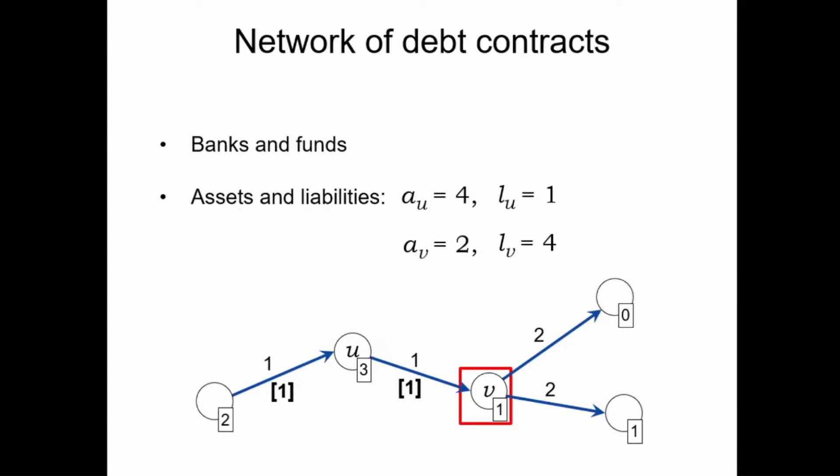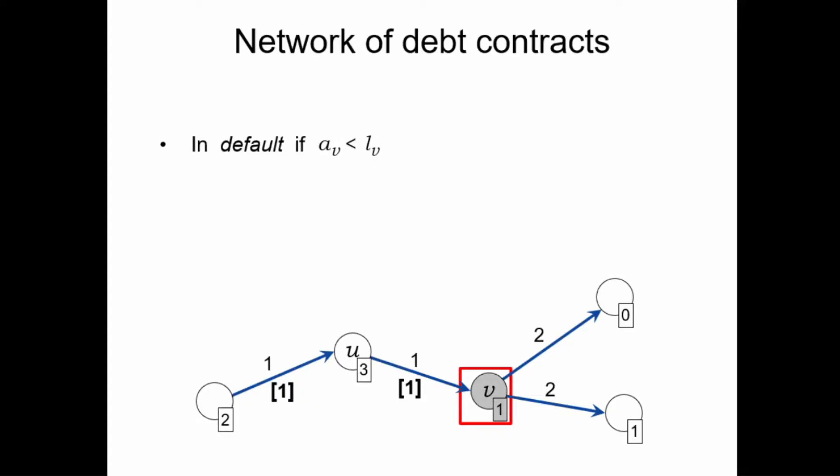Bank V has one unit of money itself and receives a payment of one from U, so it has assets of two. But it has total liabilities of four towards these two sink nodes. This is an example of the case when V is unable to fulfill its obligations — we say that bank V is bankrupt, or in financial terms, V is in default. In this case, the model assumes that V must use all of its assets to make as many payments on its outgoing debts as possible, and it makes these payments proportionally to the payment obligations. So V will transfer one unit of money to both of the sink nodes.